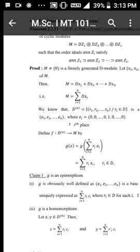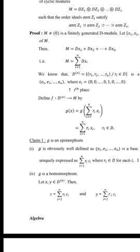Define g from D raised to n to M by g(x) = g(summation of ri·ei) = summation of ri·xi, for i = 1 to n. We claim that g is an epimorphism.